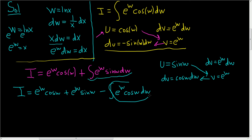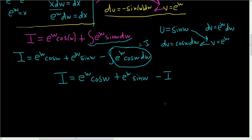This is what we started with. So this is i. So writing this again, we have i equals e to the w cosine w plus e to the w sine w minus i. And now we'll simply add i to both sides. So adding i to both sides, plus i plus i. These cancel. And so we get 2i equals e to the w cosine w plus e to the w sine w.